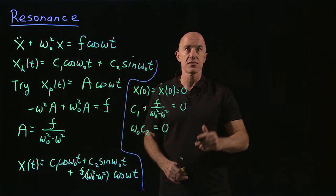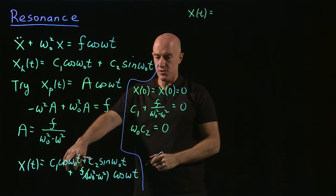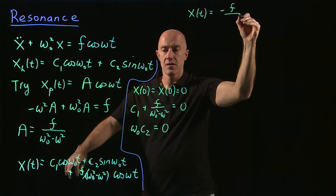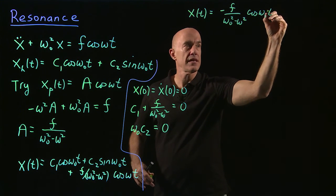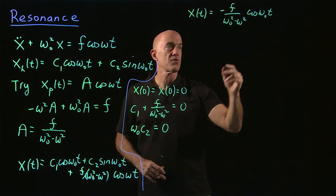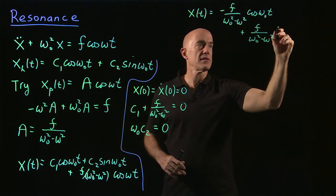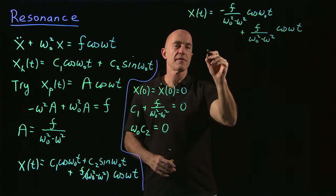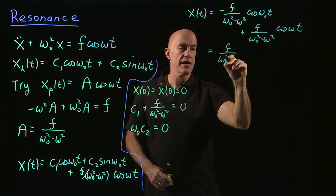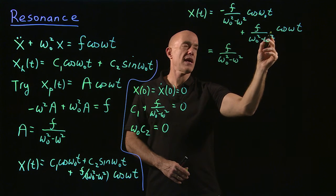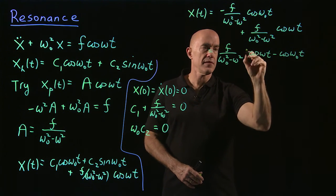We can write down the solution. x(t) equals minus f over omega naught squared minus omega squared times cosine omega naught t, plus f over omega naught squared minus omega squared times cosine omega t. We can write this in a nicer way by factoring out f over omega naught squared minus omega squared, giving us cosine omega t minus cosine omega naught t.